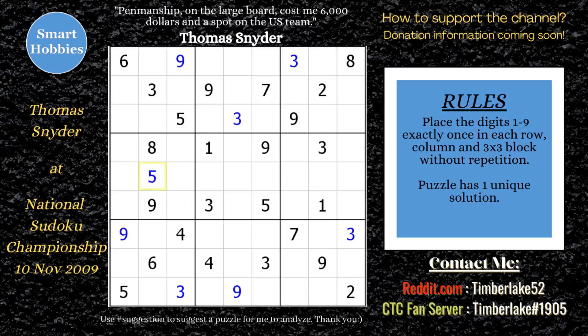At this point, with 8 cells solved and about 45 seconds into it, Snyder started using his trademark Snyder Notation. In case you're not familiar, Snyder Notation is a technique where you mark within blocks where a particular candidate can only be in 2 possible cells within that block. He then looked at the 5s and marked 5s in block 6 along row 4 — he marked a 5 here and a 5 there, because he saw these two 5s.